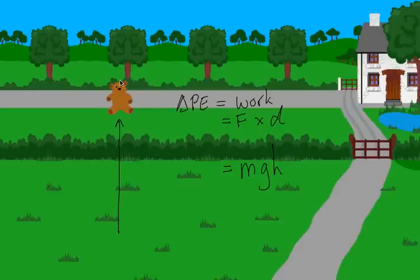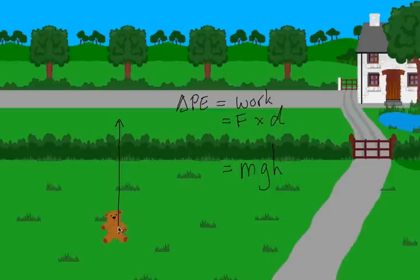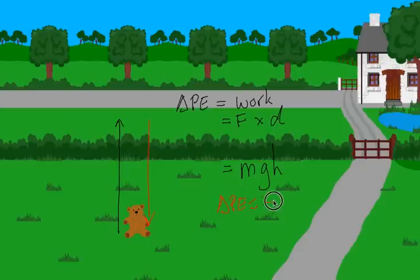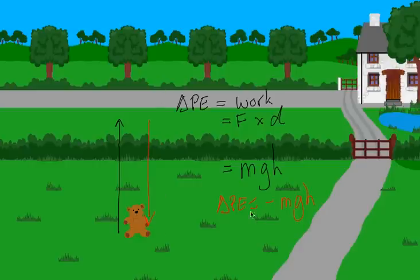Clearly, the gravitational potential energy is higher the further Teddy is from the earth, and lower down here. We're only dealing with the change. Lifting Teddy up gives us a positive change in gravitational potential energy. If I put Teddy back down again, the change is now in a downward direction, so the change in gravitational potential energy is negative mgh — my final value is smaller than my initial, giving a negative result.